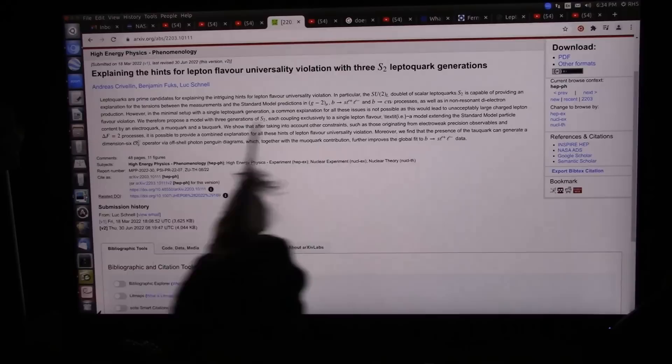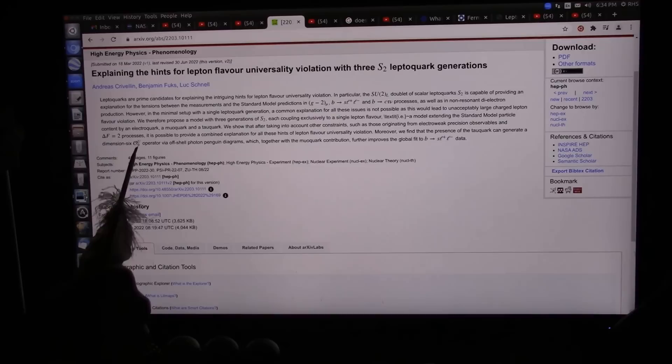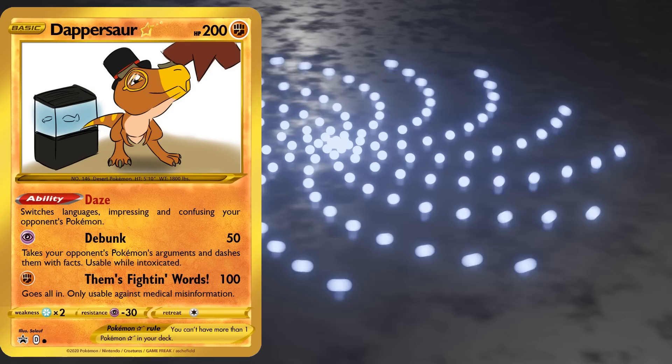Moreover, we find that the presence of the tauquark can generate a dimensional six, whatever this thing is. Yep, I was right. He doesn't understand it, so it must be nonsense. Octo-Upper-9 operator via off-shell photon penguin diagrams.